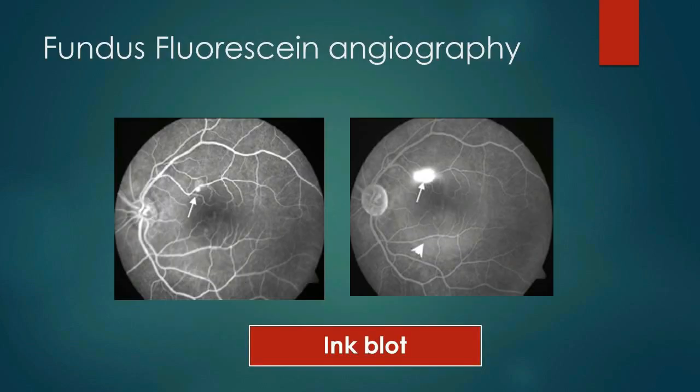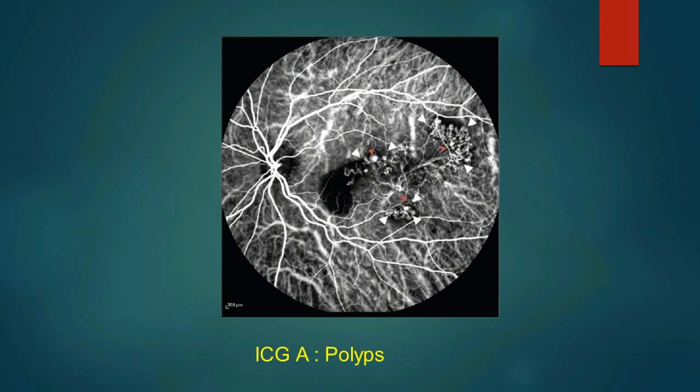Fundus fluorescein angiography is helpful to detect leakages, like ink-blot leakage in CSR. ICG angiography is mostly useful for choroidal vascular lesions — here we can see hotspots of idiopathic polypoidal choroidal vasculopathy.